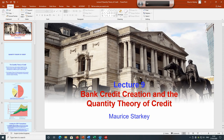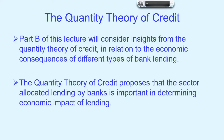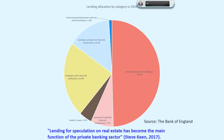This is the second part of Economics for Business Lecture 9, which considers the quantity theory of credit. We'll be looking at the quantity theory of credit in relation to the insights it provides into what are the economic consequences of different types of bank lending. The theory proposes that the sector allocated lending by financial institutions is important in determining the impact of that lending.